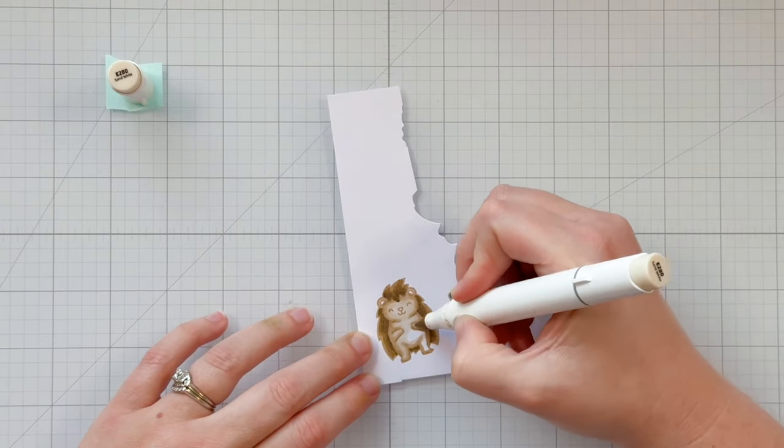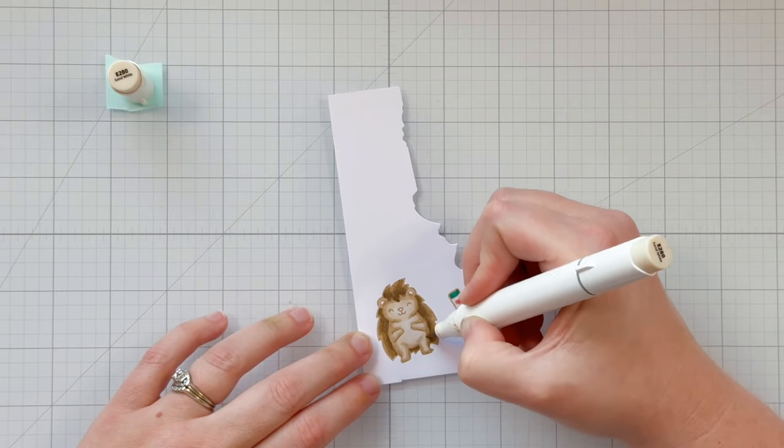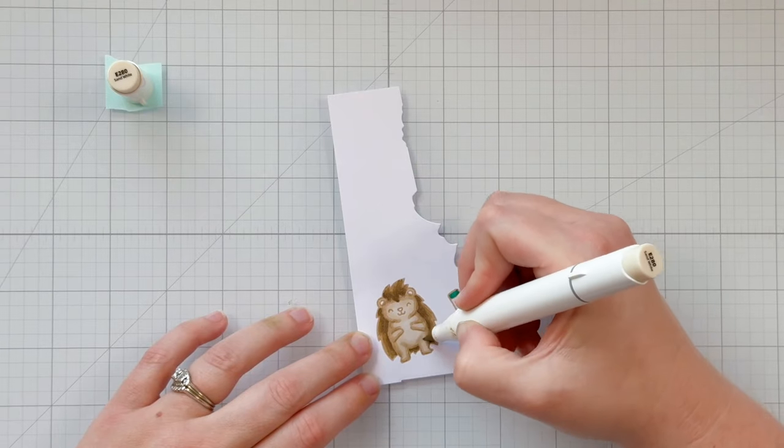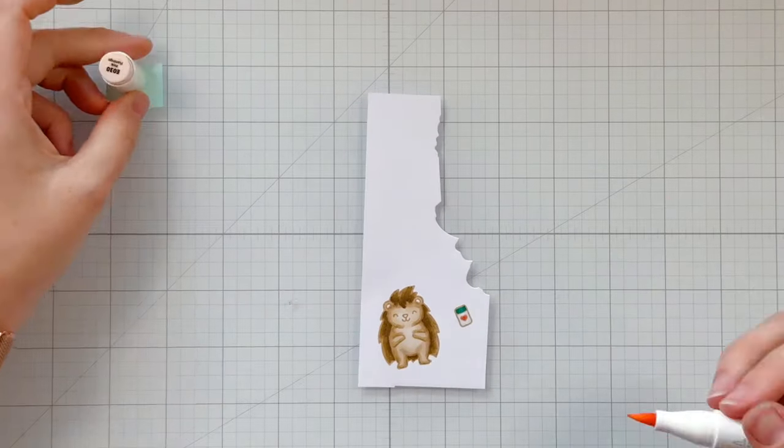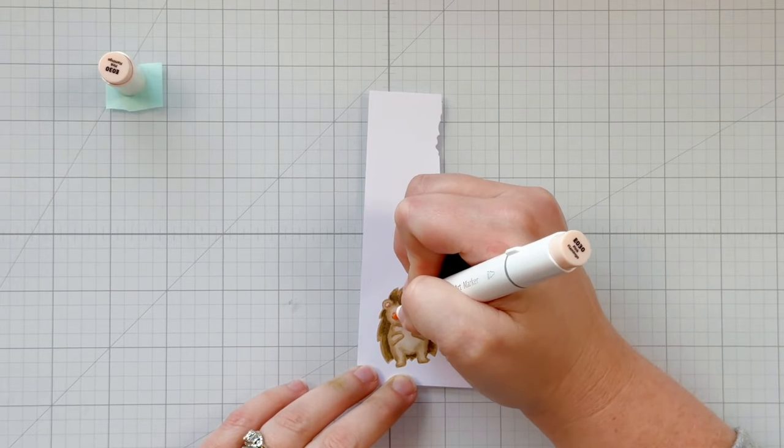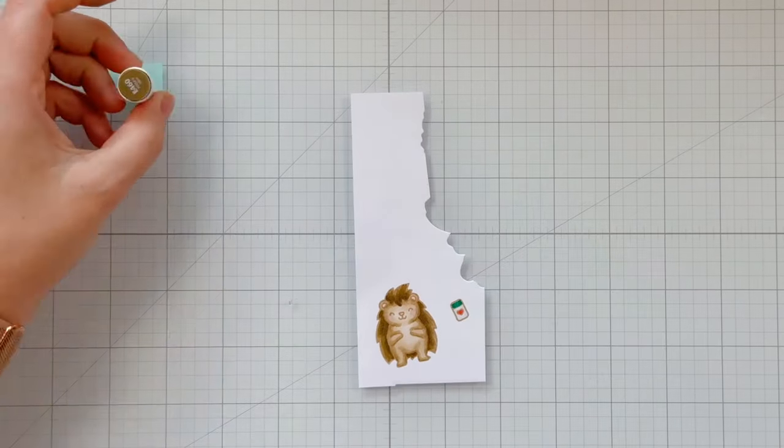I think this would look so cute watercolored or with colored pencils so pick your favorite and color in your adorable little porcupine. Once I'm done blending I'm bringing out E030 to color in the porcupine's ears, nose, and to add cute little cheeks to my sweet little image.